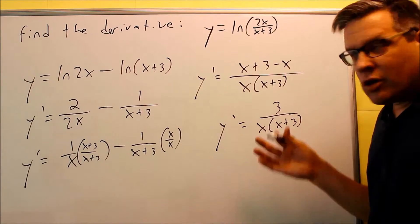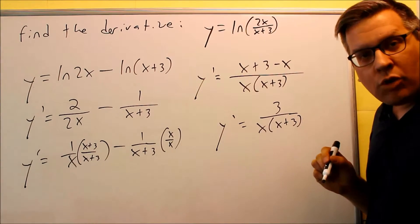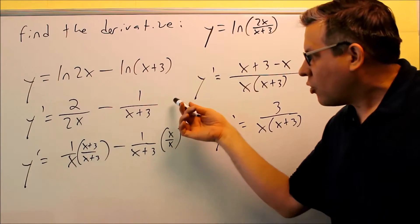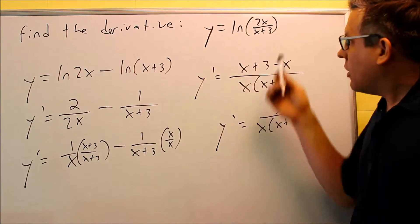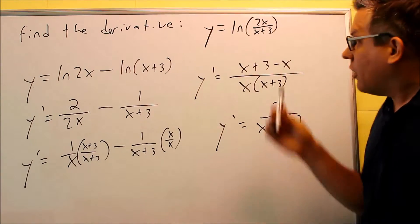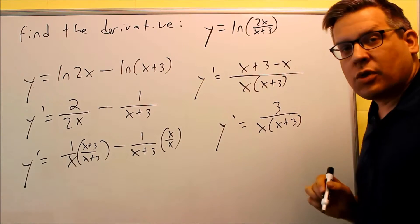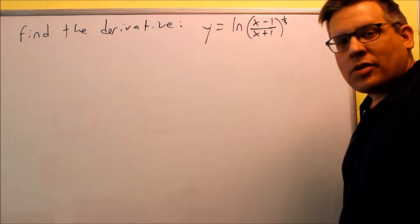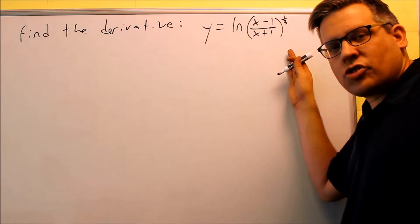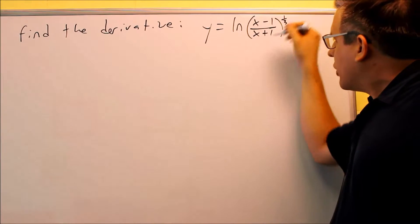So again, the summary here is you definitely want to use your log properties because that problem was a whole lot easier to do than trying to deal with the other way of doing it, which would be the derivative of 2x over x plus 3 all over 2x over x plus 3. Here's another problem that's going to benefit from us first using log properties to break this apart.